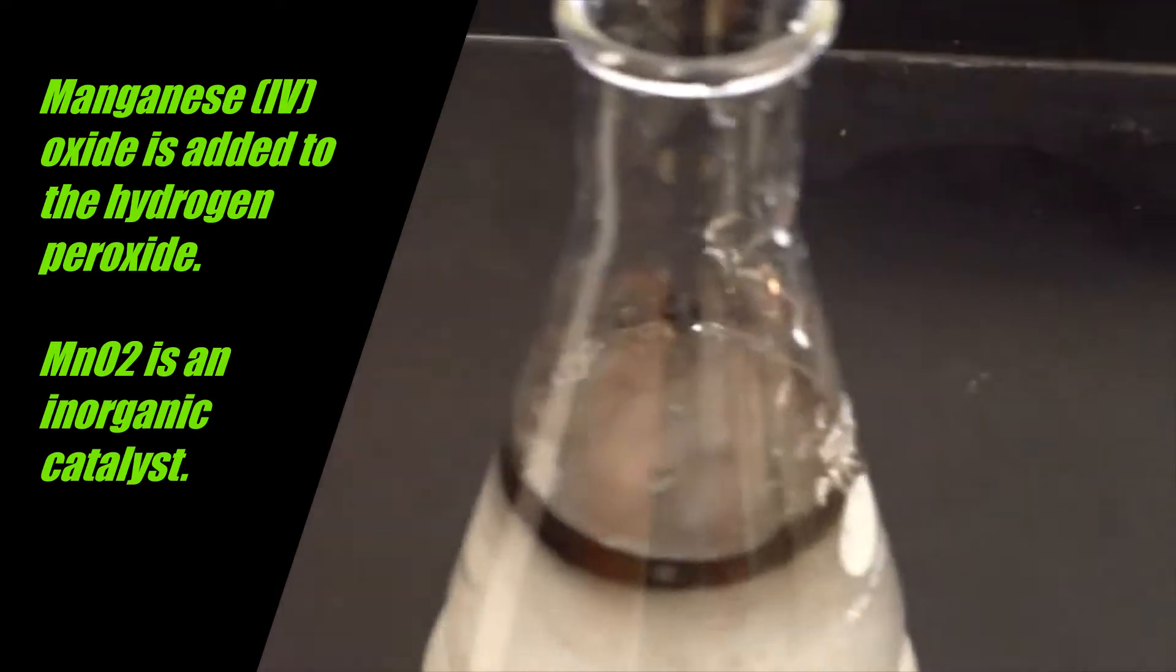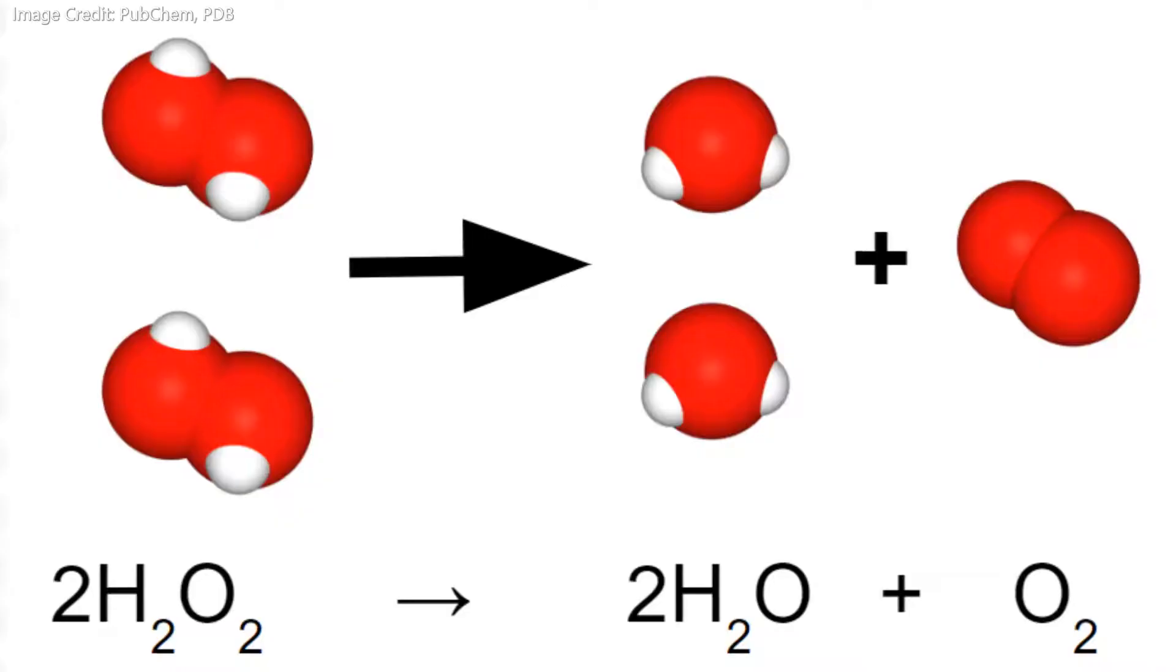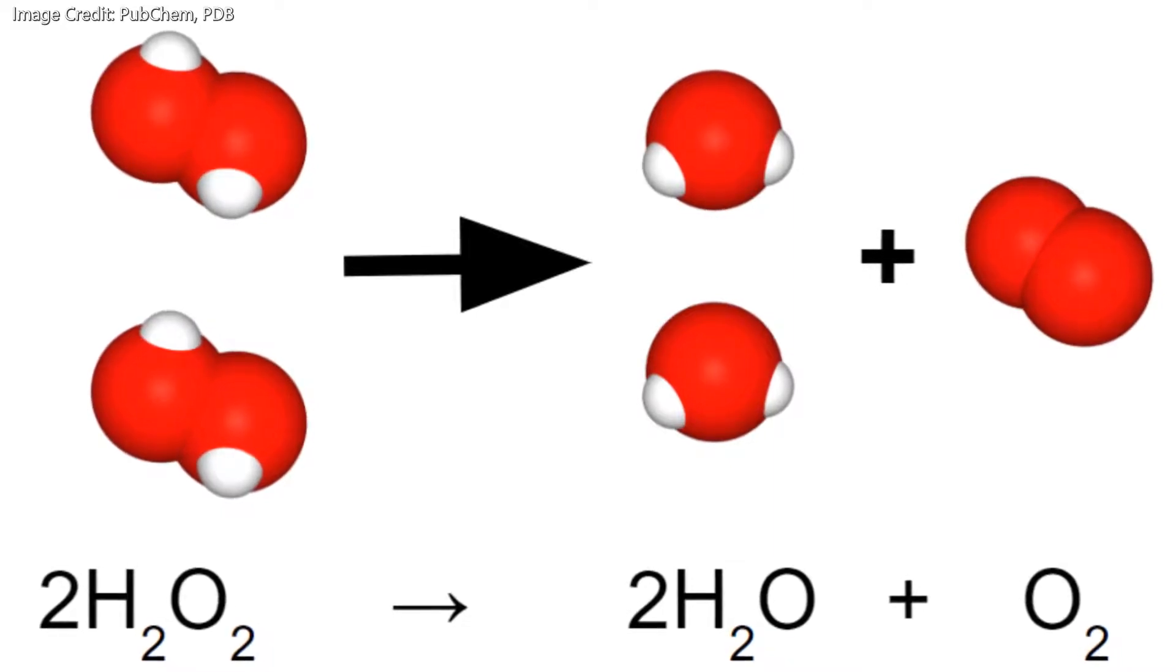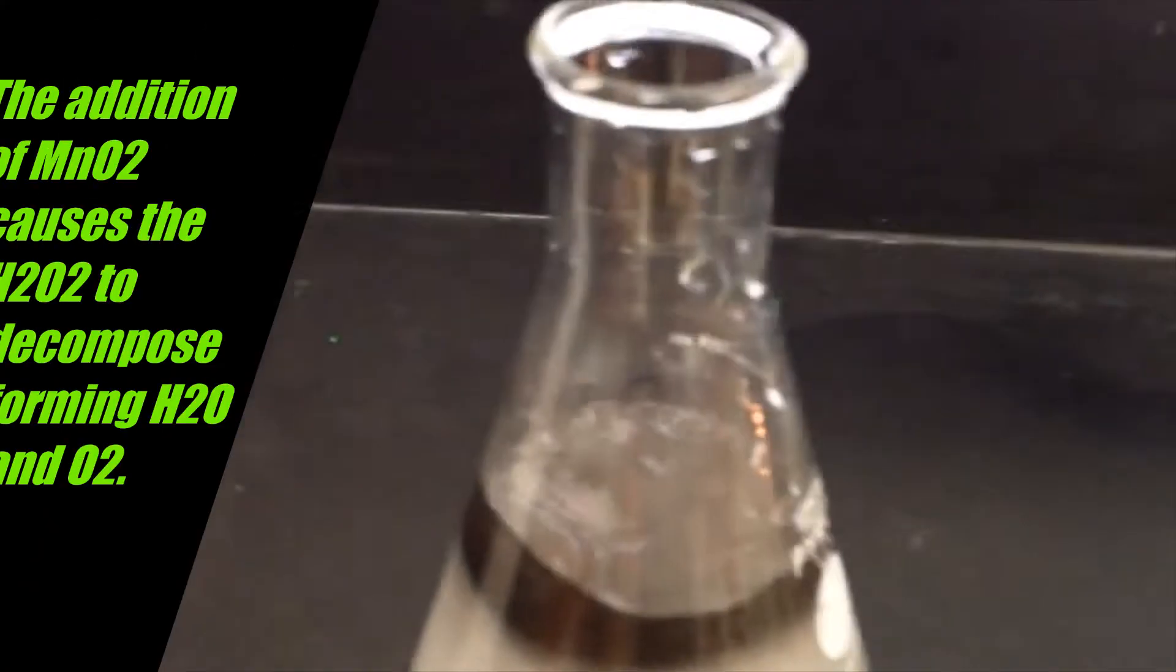The manganese 4-oxide is a black powder being added to the peroxide. The resulting process is called a decomposition reaction because the hydrogen peroxide is broken down to make water and oxygen.